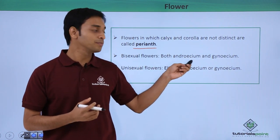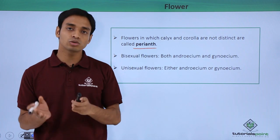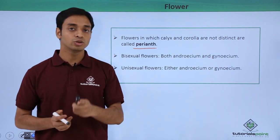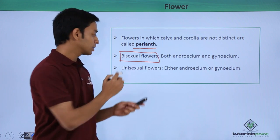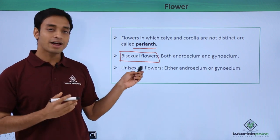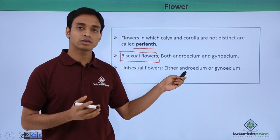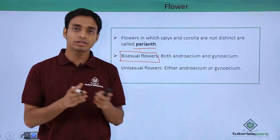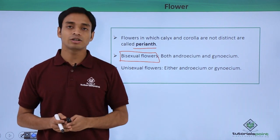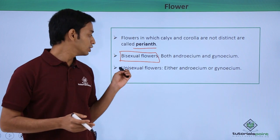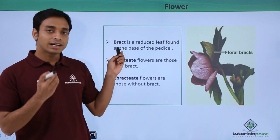Flowers in which both the androecium (male structure) and the gynoecium (female reproductive structure) are present in a single flower are called bisexual flowers. In contrast, flowers that have either only the androecium or only the gynoecium are known as unisexual flowers.